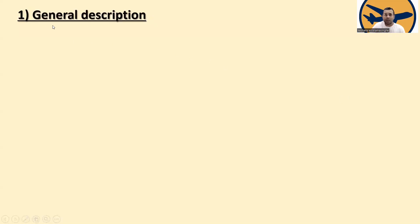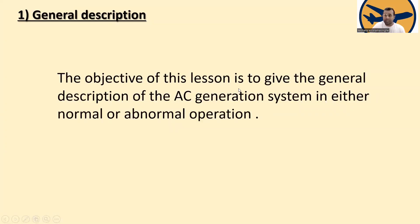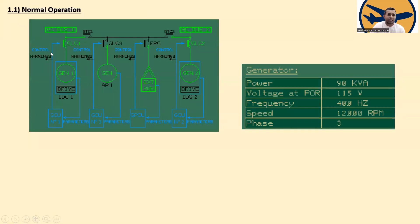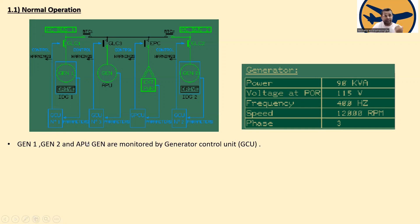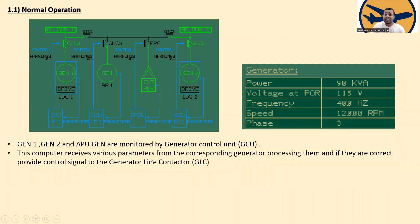The objective of this lesson is to give a general description of the AC generation system in either normal or abnormal operation. You can see Generator 1, Generator 2, APU Generator, and External Power. Generator 1, Generator 2, and the APU generator are monitored by the Generator Control Unit. Gen 1 is monitored by GCU 1, Gen 2 by GCU 2 — remember, these three generators are monitored by the Generator Control Unit.